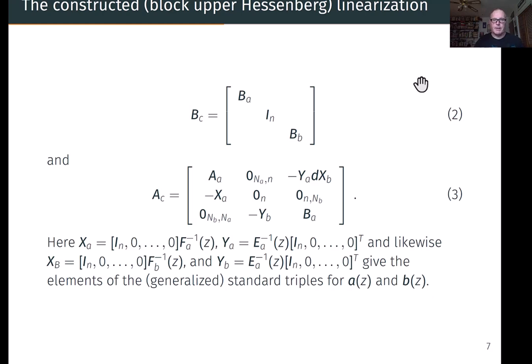B is just formed from the B matrices of each piece. And the A matrix is formed from the A matrices of each piece. I see another typo here; I fixed one typo in the previous practice round. That should be an A down here, not B sub A. So we have the A matrices from each of those pieces in the proper corners, and then we have material that glues these things together that arise from the standard triples, the generalized standard triples of the individual pieces. Great.